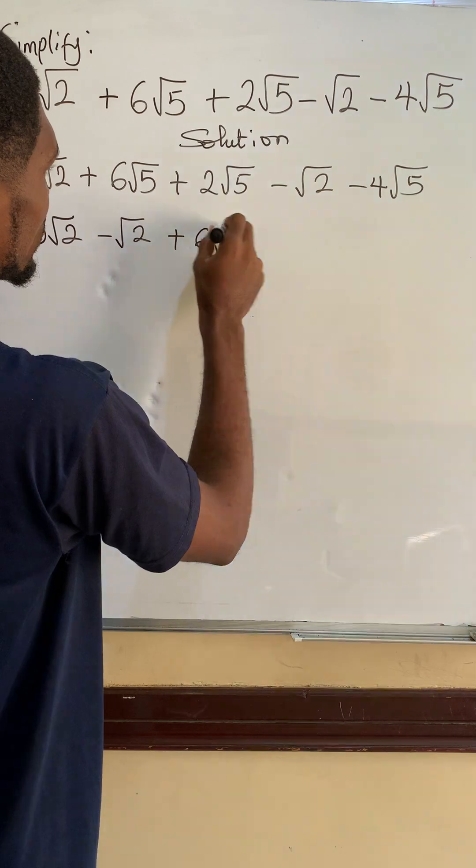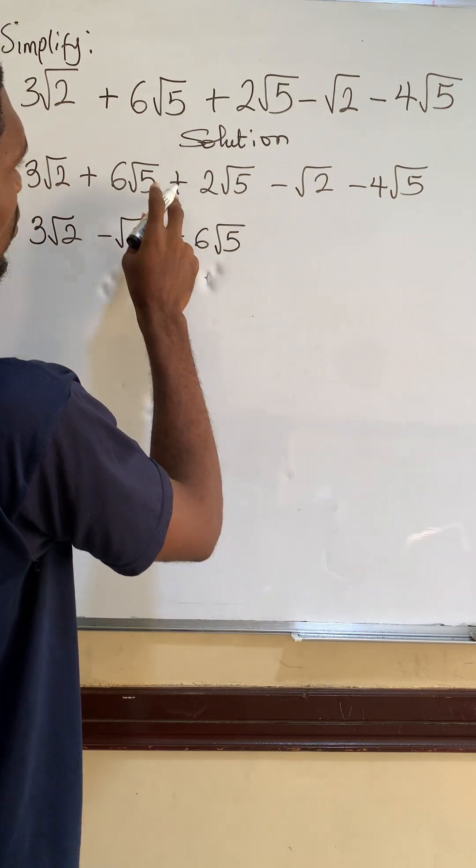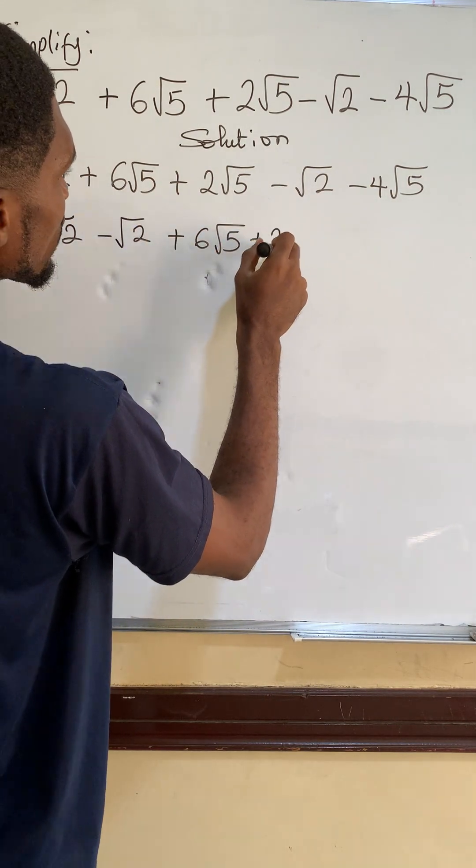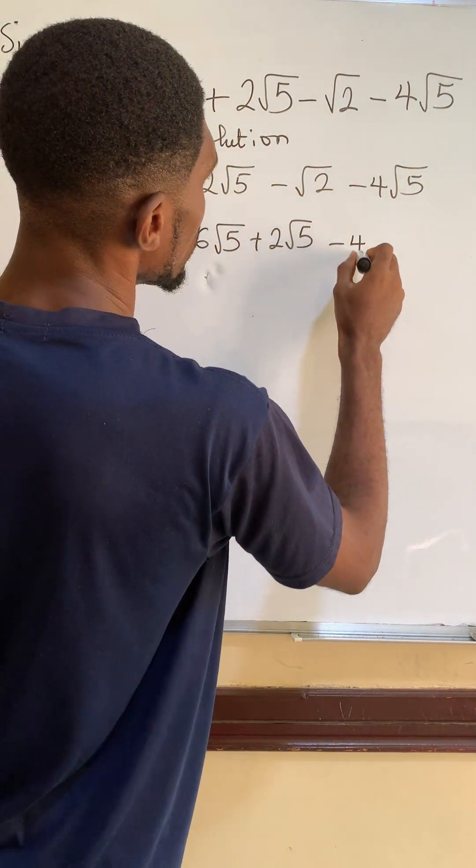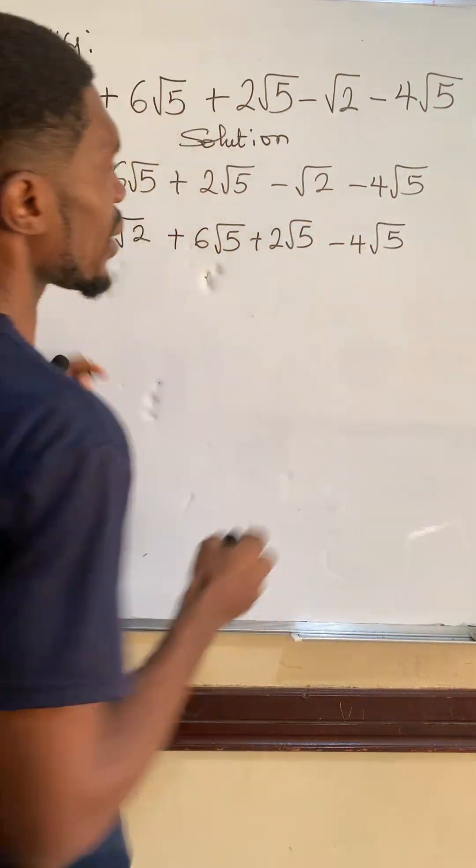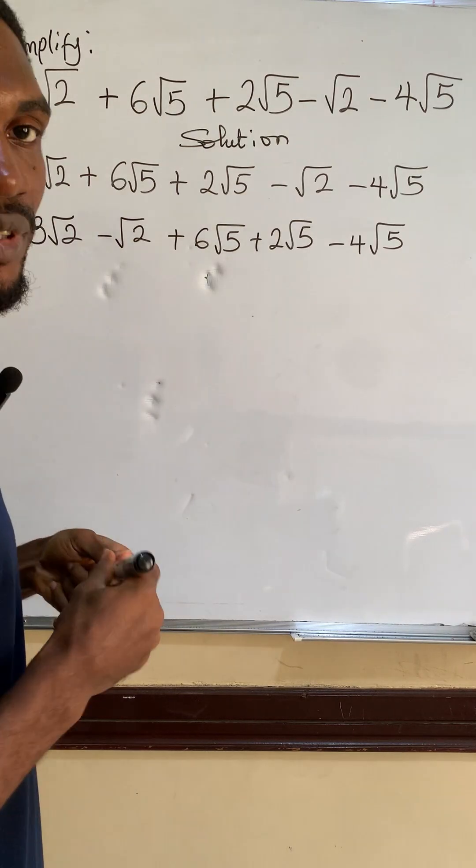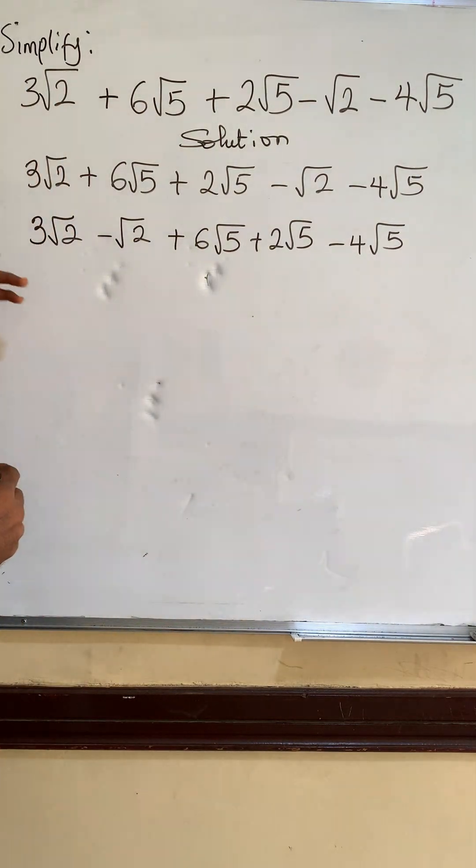Then we have plus 6 root 5, we have plus 2 root 5, and then we have minus 4 root 5. So we're done with collecting like terms.